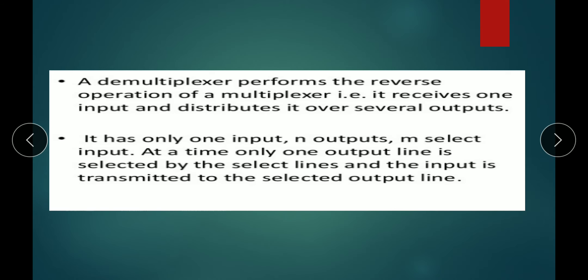Now we start the demultiplexer. The demultiplexer performs the reverse operation of the multiplexer — it receives only one input and distributes it over multiple outputs. So it has only one input, n number of outputs, and m select lines. At any time only one output line is selected by the select lines.